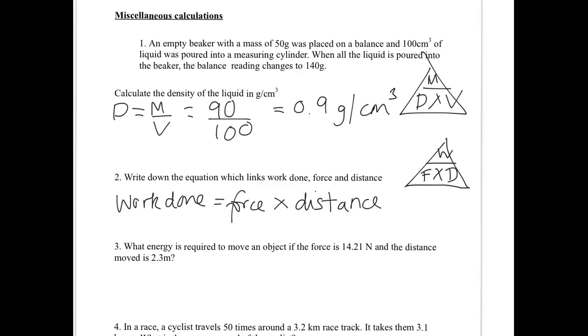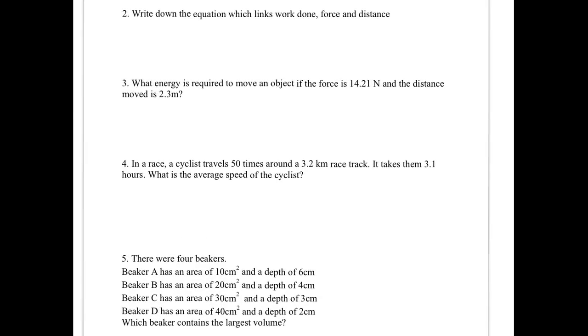Question three. What energy is required to move an object if the force is 14.21 Newtons and the distance moved is 2.3 meters? Remember that work done and energy are the same thing because they have the same units, which is joules. Also, you can use that equation we've just written. So work done equals force times distance. Force is 14.21 times distance, which is 2.3. I'm running out of space. I'm going to do the terrible thing of writing two equal signs on the same line. I'm going to use my calculator to get the answer of 32.683. I'm going to round to three significant figures, which is always a good bet. Obviously 32.7 and the units are joules.